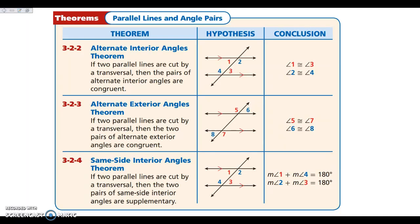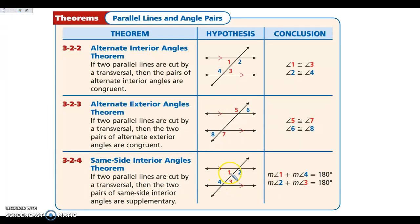Then we look at our other pairs of angles. Our alternate interior angles — angles 1 and 3, and angles 2 and 4 — are also congruent. Our alternate exterior angles — 5 and 7, and 6 and 8 — are congruent as well. The next set is our same-side interior angles, and these are going to be supplementary.